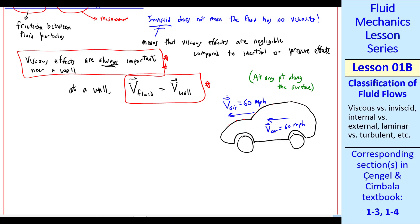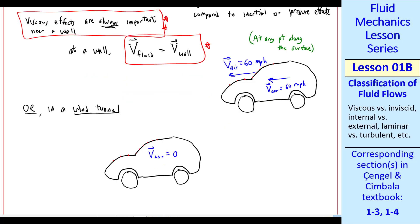This is true at any point along the surface of this vehicle. In other words, the air moves with the car. If you were running this in a wind tunnel, the velocity of the car is zero. It's stationary in the wind tunnel, but the wind hitting it is at 60 miles per hour. In that case, at any point along the surface, v has to equal zero.